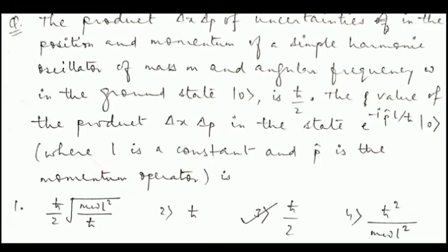Looking at the options: if ℓ=0, the first option becomes 0, but we have been given that Δx·Δp for the ground state is ℏ/2, so the first option cannot be correct. Similarly, the second option gives ℏ but we want ℏ/2, so it is also incorrect. The fourth option gives infinity when ℓ=0, so it cannot be correct either. Therefore the only option that can be correct is the third option.